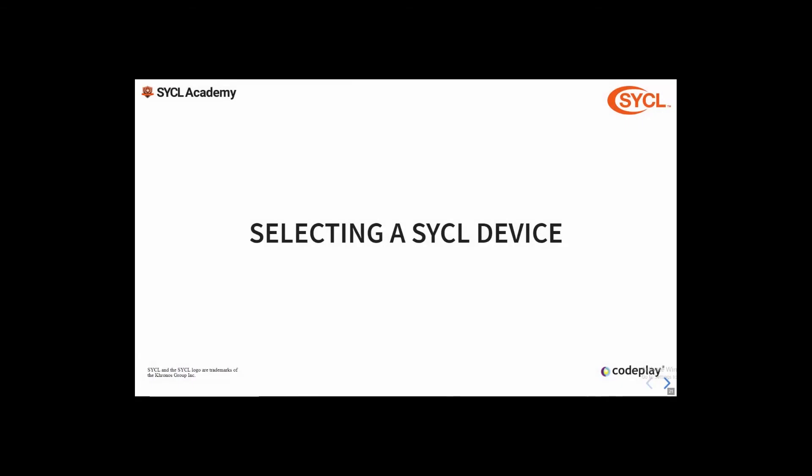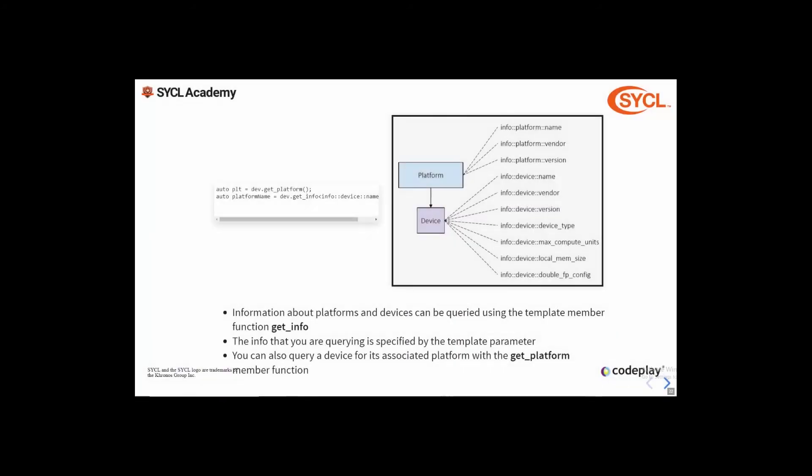Now we've covered how to create a device selector, but how do you decide what to score each device? In the body of your device selector's function call operator you can query the device or its platform for information to determine its score. You can do this by calling the get_info member function template, providing one of the many enum values corresponding to different pieces of information you can query. You can also retrieve the platform associated with any device by calling get_platform. For a full list of available queries, see the SYCL 1.2.1 specification or reference cards.